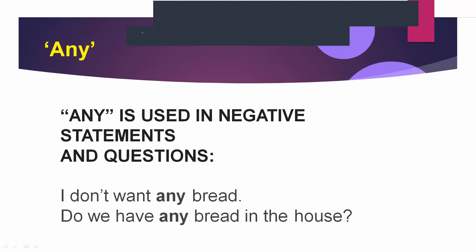Just opposite to 'some' is 'any.' We use 'any' in negative sentences and questions. Just as 'some' is used in positive statements, 'any' is used in negatives and questions. For example: 'I don't want any bread' — this carries the sense of 'no bread,' but we use 'any' because the sentence is already negative. 'Do we have any bread in the house?' — this is a question.